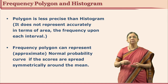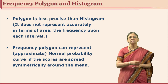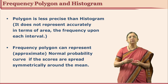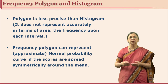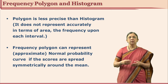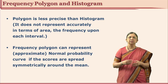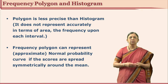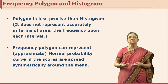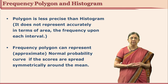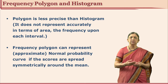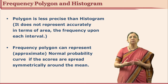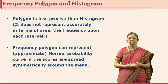We have seen frequency polygon and we have also seen histogram. Can we compare when to use frequency polygon and when to use histogram? The researcher who is interested in graphically representing the distribution must know which one to use and when. Of course it is at the researcher's discretion, but if it is more appropriate to use one, we should use that one.